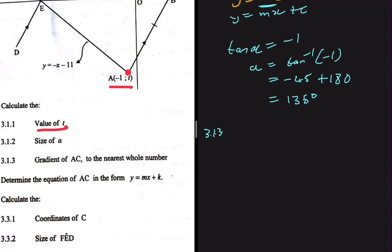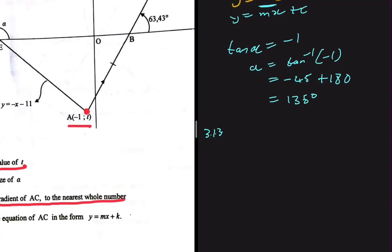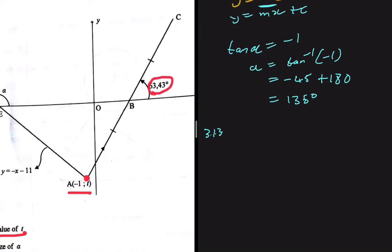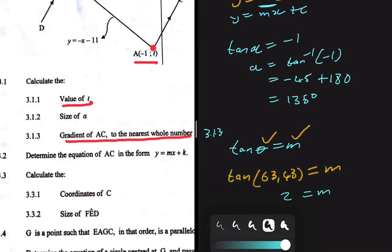For 3.1.3, we calculate the gradient of AC. Here we're doing the opposite of 3.1.2: we're given the angle and need to find the gradient. Using tan of theta equals gradient, we have tan of 63.43 degrees equals m. Calculating tan of 63.43 gives 2, so our gradient m equals 2. That is 3.1.3 — nothing too complicated so far.